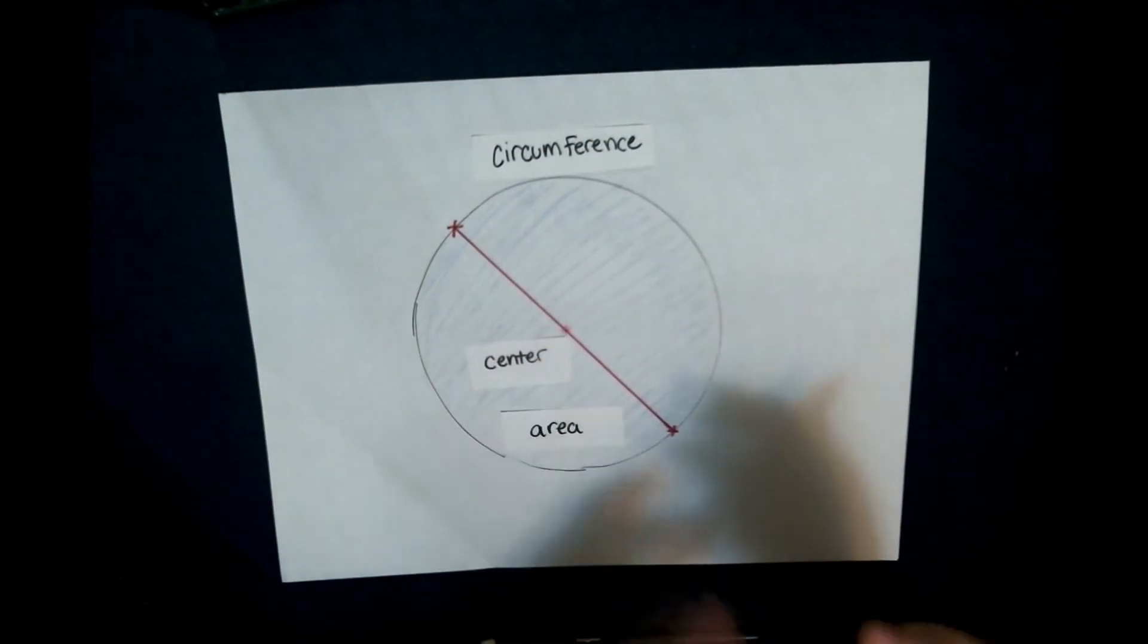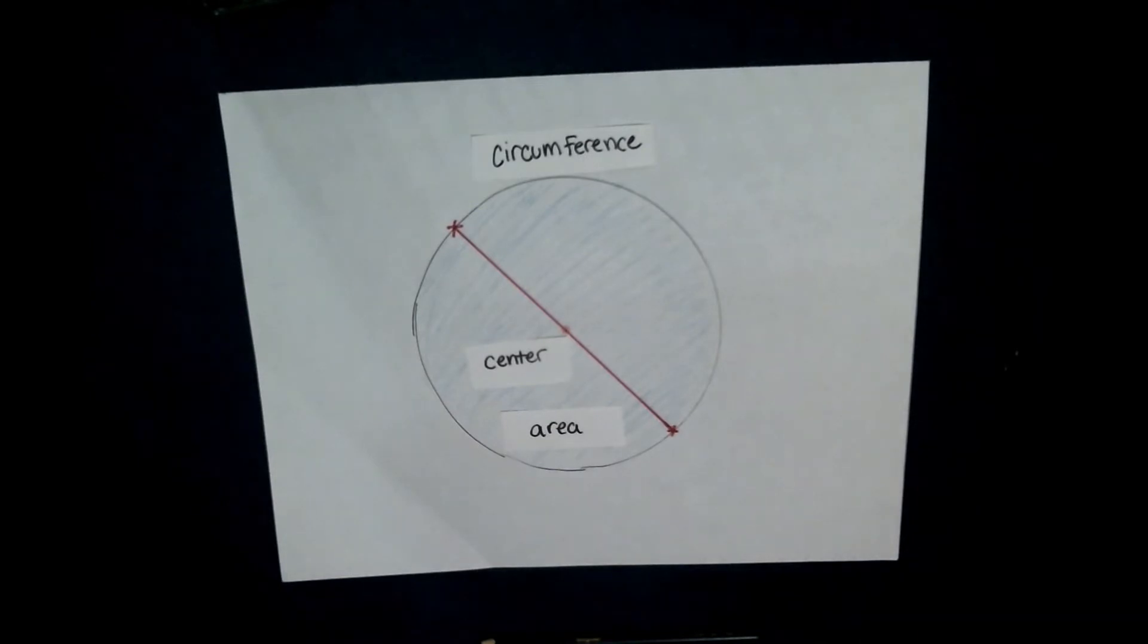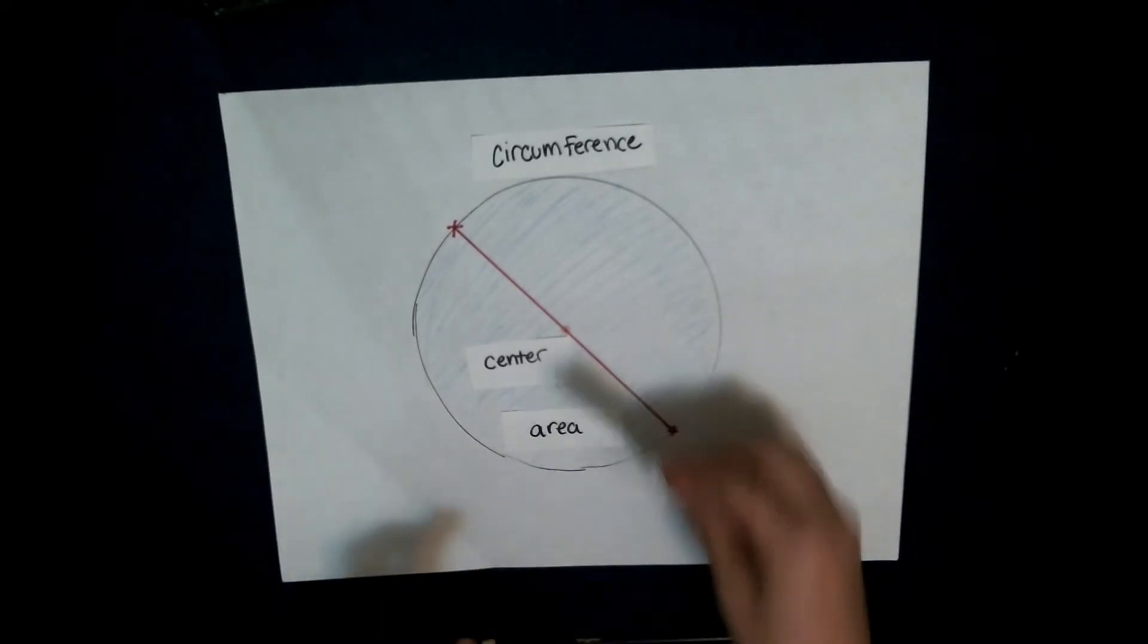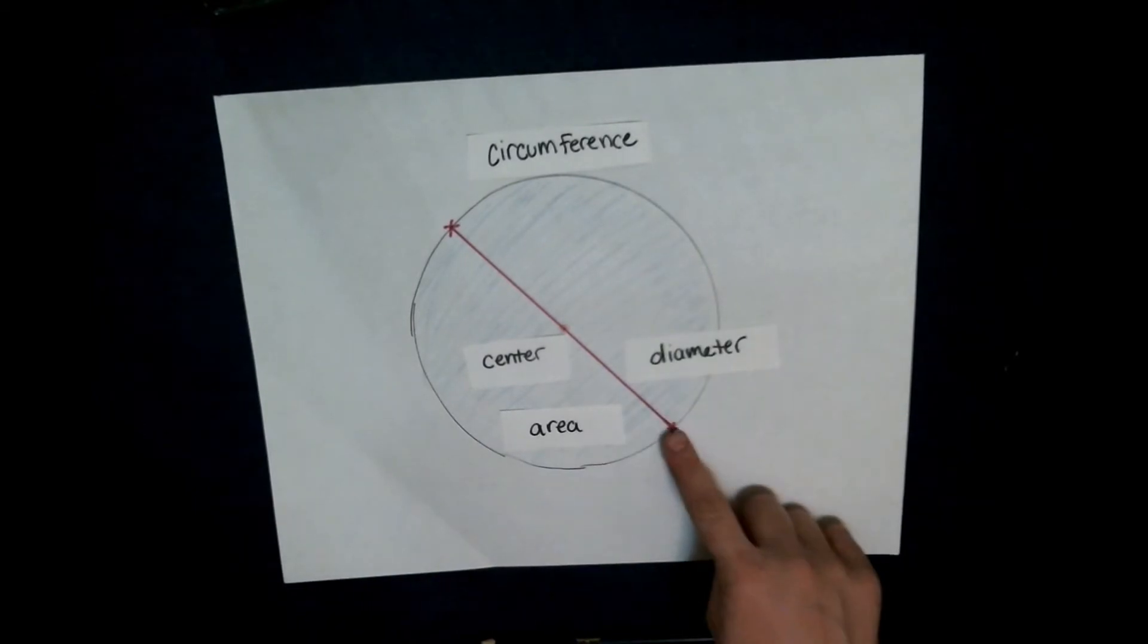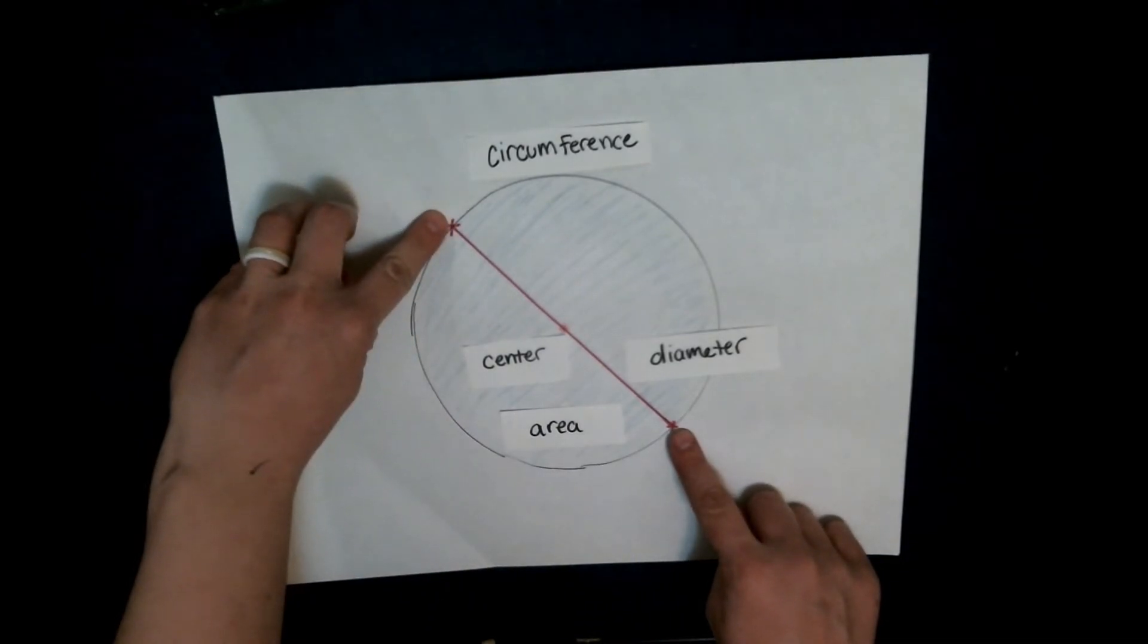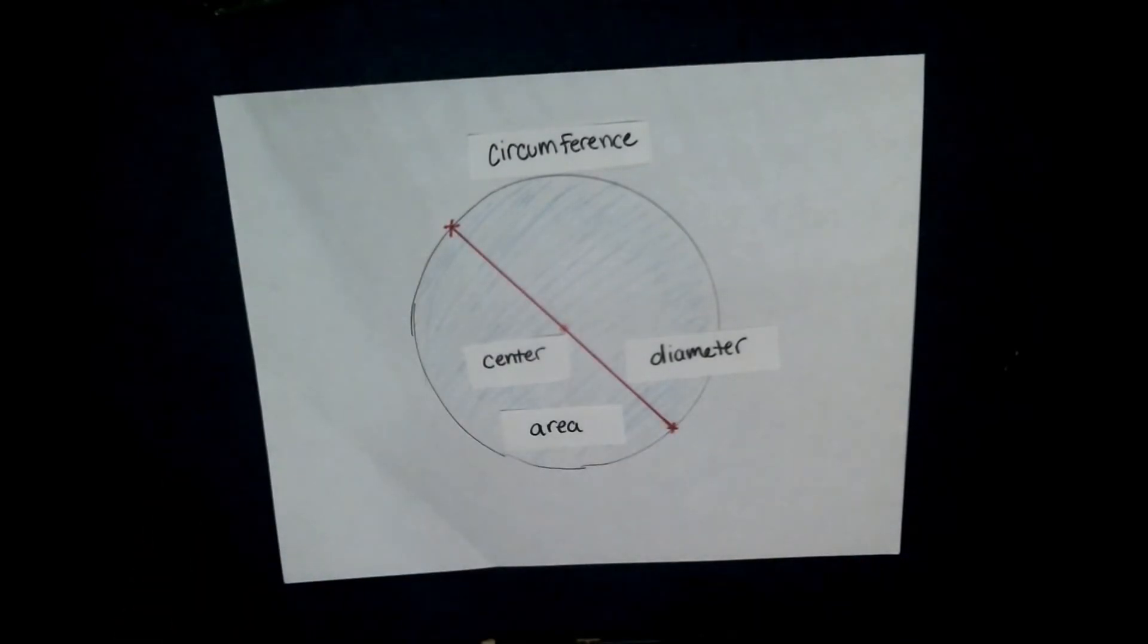There's a special name for this type of line. This type of line is called a diameter. A diameter is a line that goes through the center of the circle and touches two points on the circumference. It has to go through the center, okay?